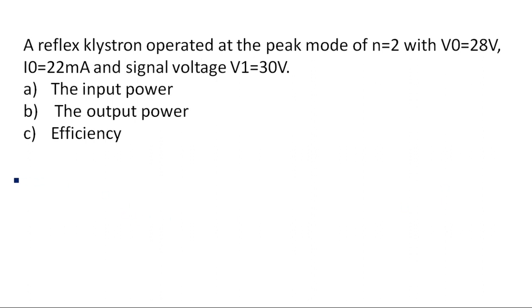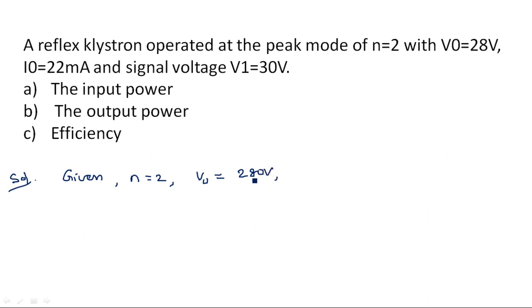First, write the given values. Number of modes n is equal to 2. V0 is equal to 280 volts. I0 is equal to 22 milliamperes. And V1 is equal to 30 volts.